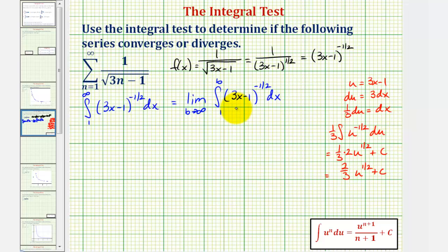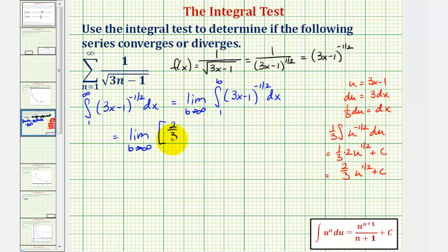So in our case, when we find the antiderivative, we're going to have the limit as b approaches infinity of two-thirds times the quantity three x minus one to the one-half. We'd have two-thirds times the quantity three x minus one to the one-half, leaving off the plus c.